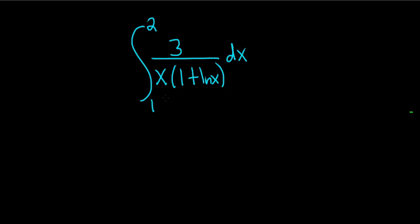Integrate 3 divided by x times 1 plus the natural log of x. Let's go ahead and carefully work through this. So we'll start by making a u substitution. We'll let u be equal to 1 plus the natural log of x.